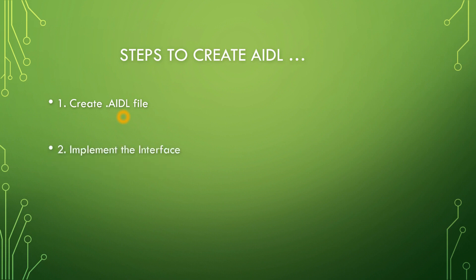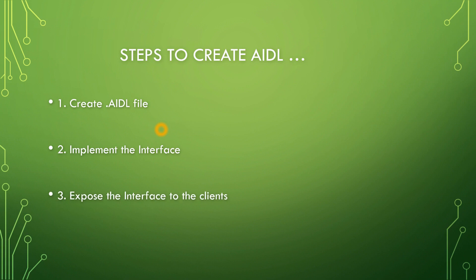After the client creates the .aidl file, AIDL will generate a stub. This stub acts like a bridge between the client and the server — all communication will happen through this stub. The server has to implement that stub. The third step is the server should expose the interface to clients. I have written a sample application and I will show you exactly how it works.